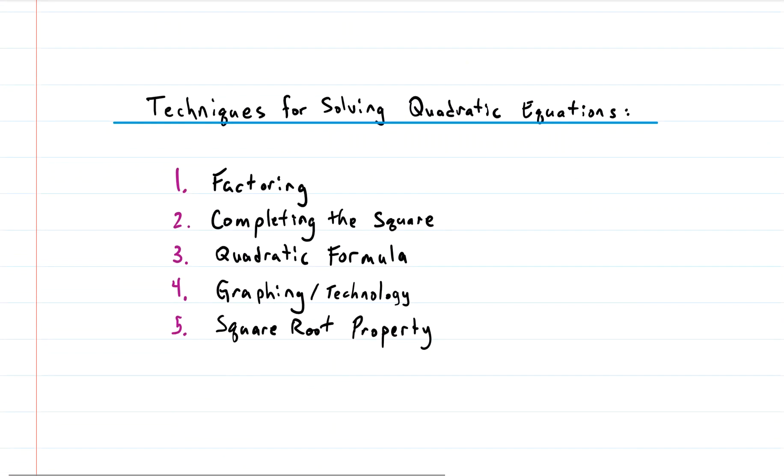Techniques for solving quadratic equations: there are quite a few of them. You can factor, you can complete the square, you can use the quadratic formula which is a shortcut for completing the square, you can use graphing or technology, or you can use the square root property. Today, we are going to use the graphing technology approach.